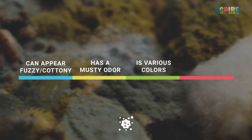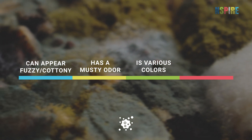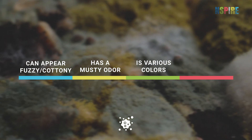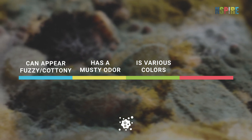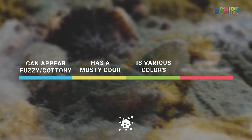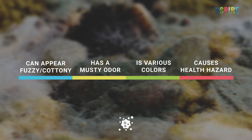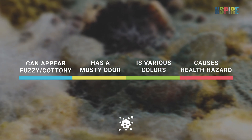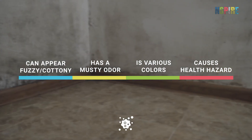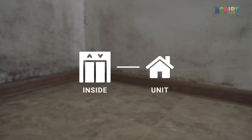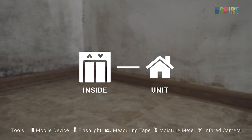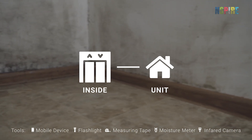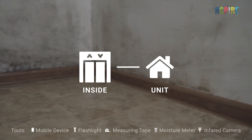These may be in small patches generally on non-porous surfaces and dusty when dry. These substances can be a hazard to participants' health. While conducting INSPIRE inspections, look for mold-like substances in the inside and unit inspectable areas.